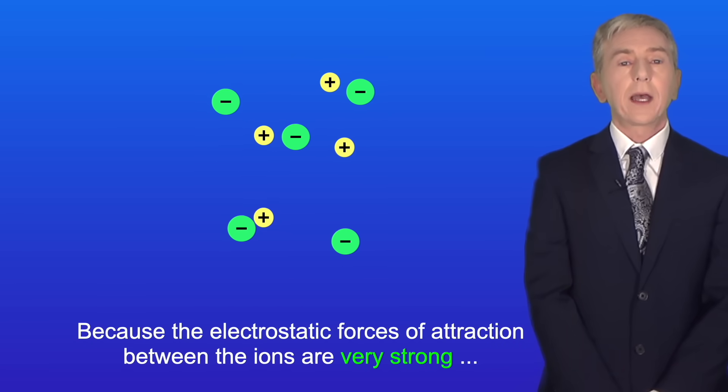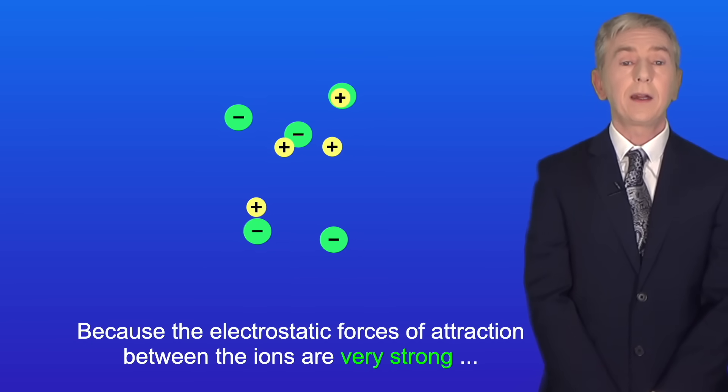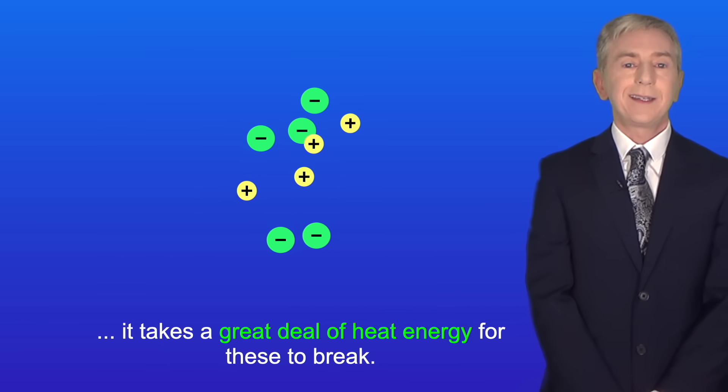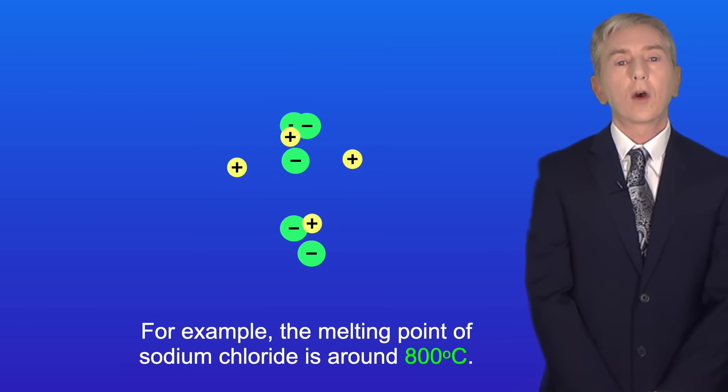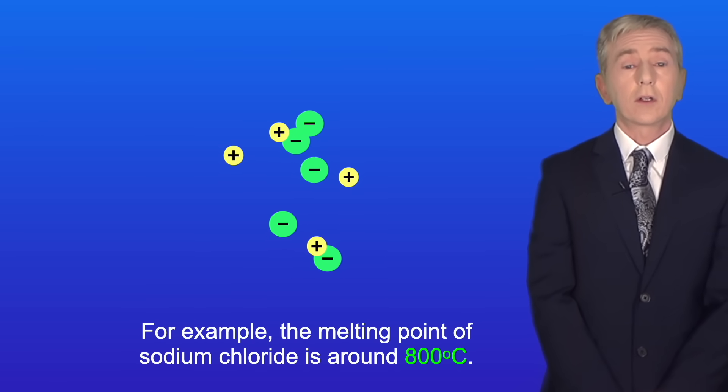Now because the electrostatic forces of attraction between the ions are very strong, it takes a great deal of heat energy for these to break. For example, the melting point of sodium chloride is around 800 degrees Celsius.